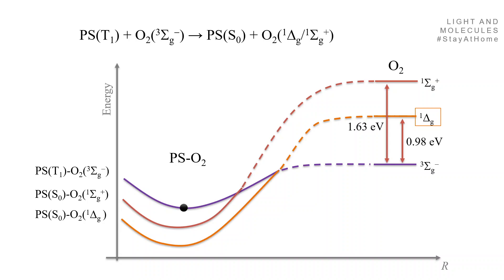So it means that now if I want to form the singlet oxygen, I should do an internal conversion either to the sigma state or to the delta state of oxygen.